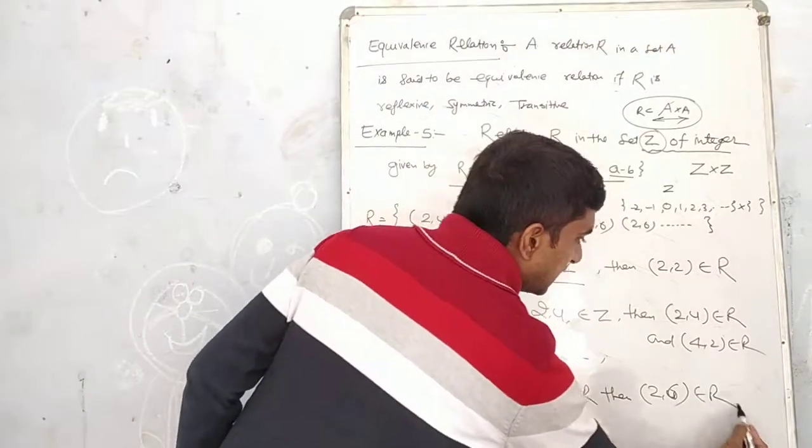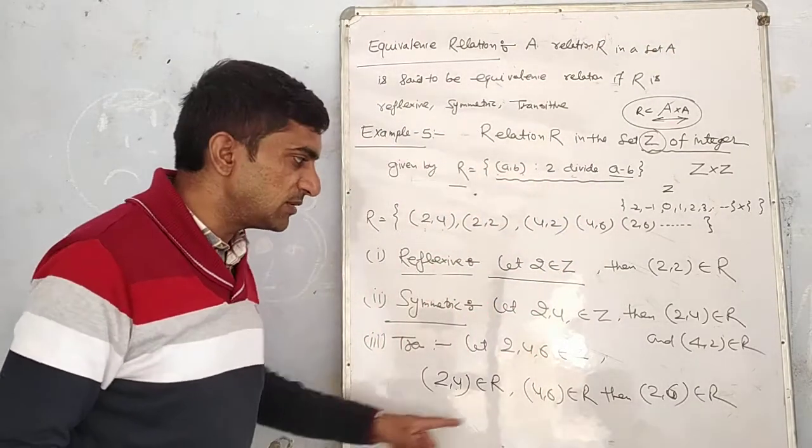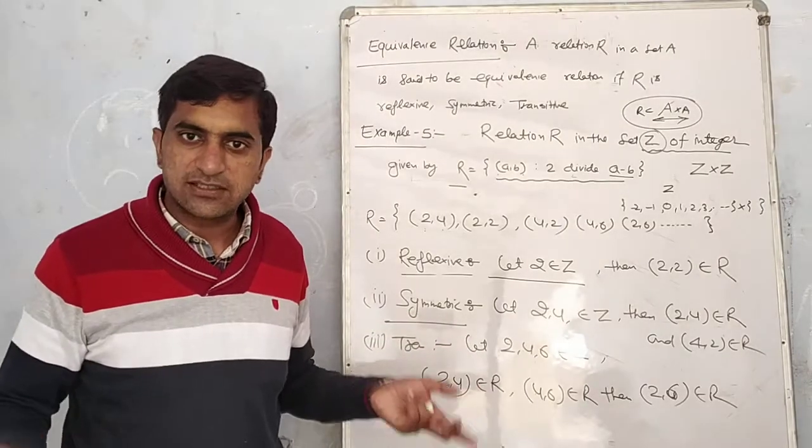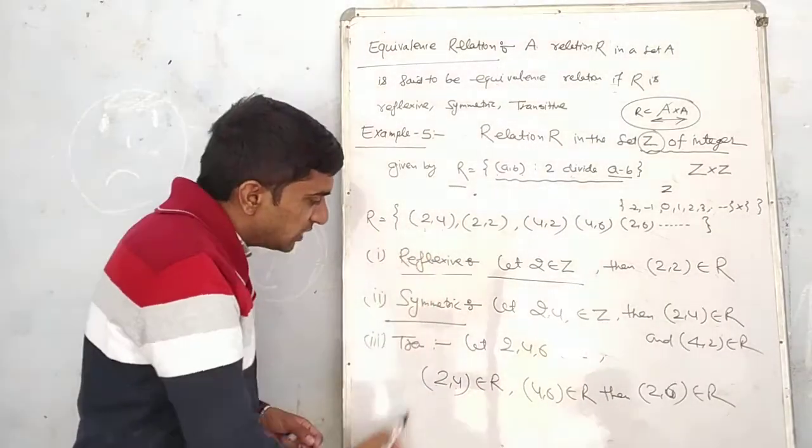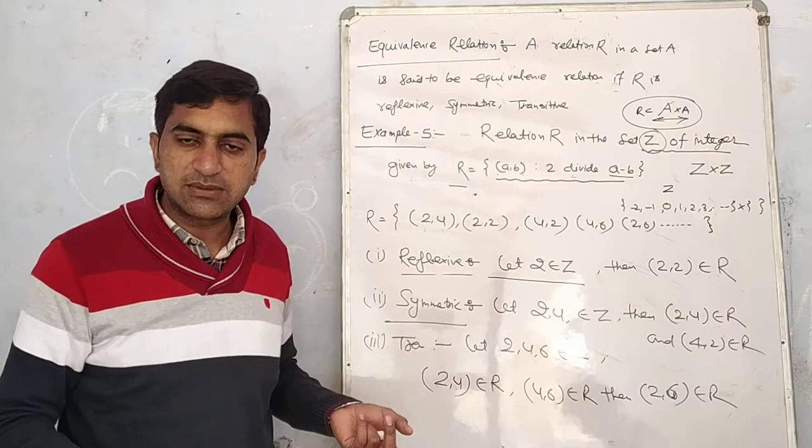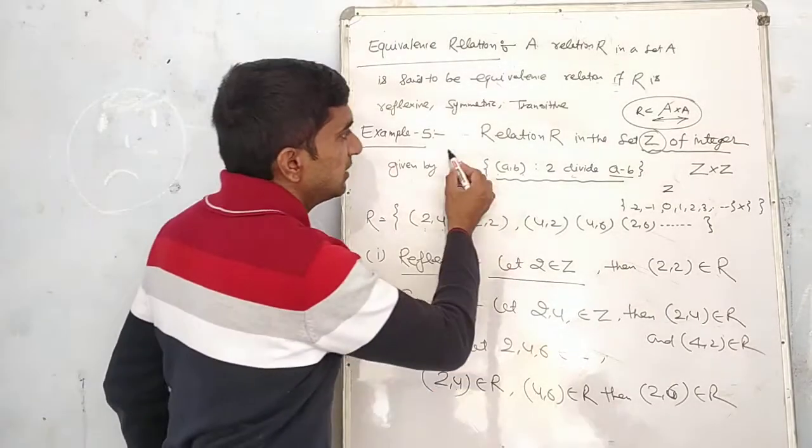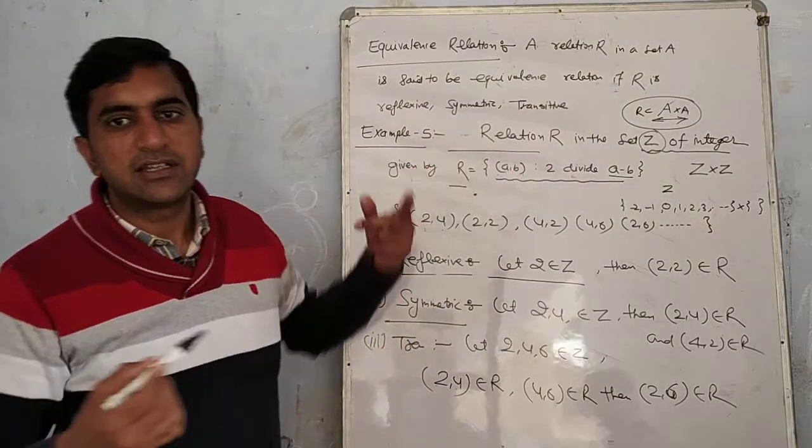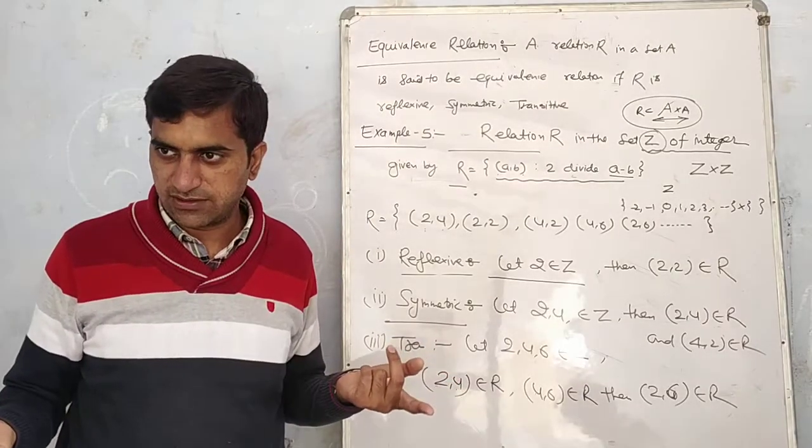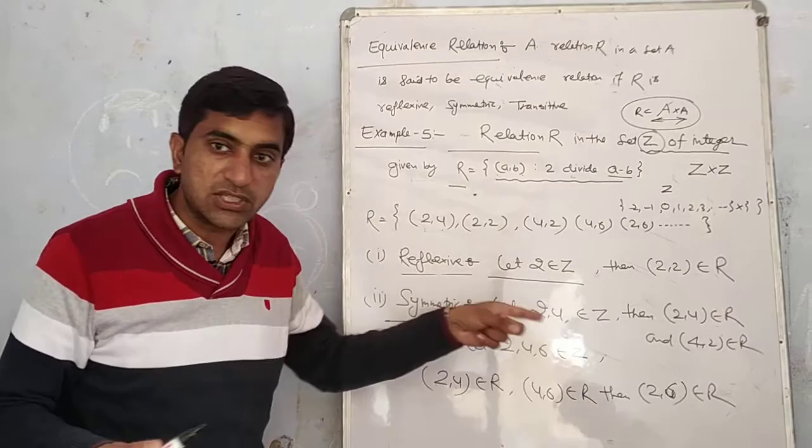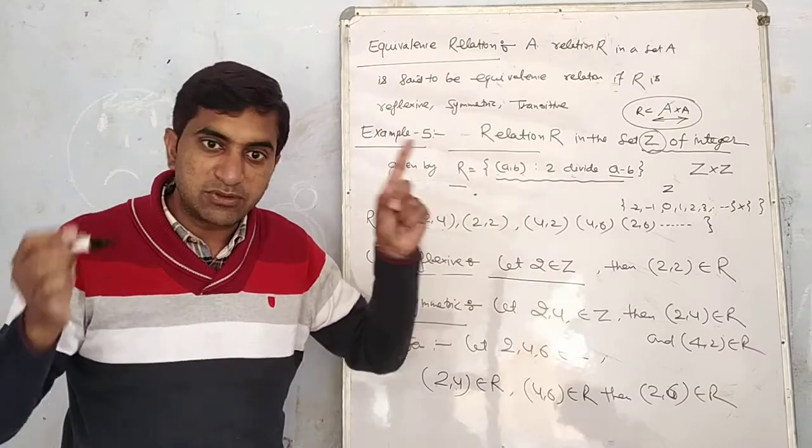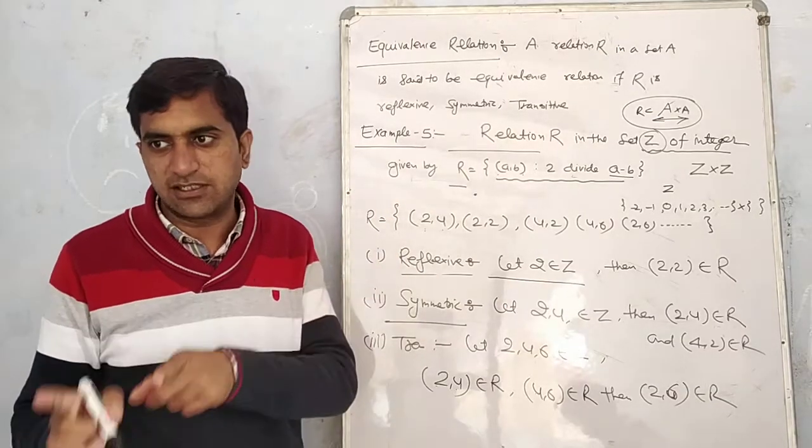So this relation is transitive. The relation satisfies all three properties. You should understand the difference about equivalence relations.